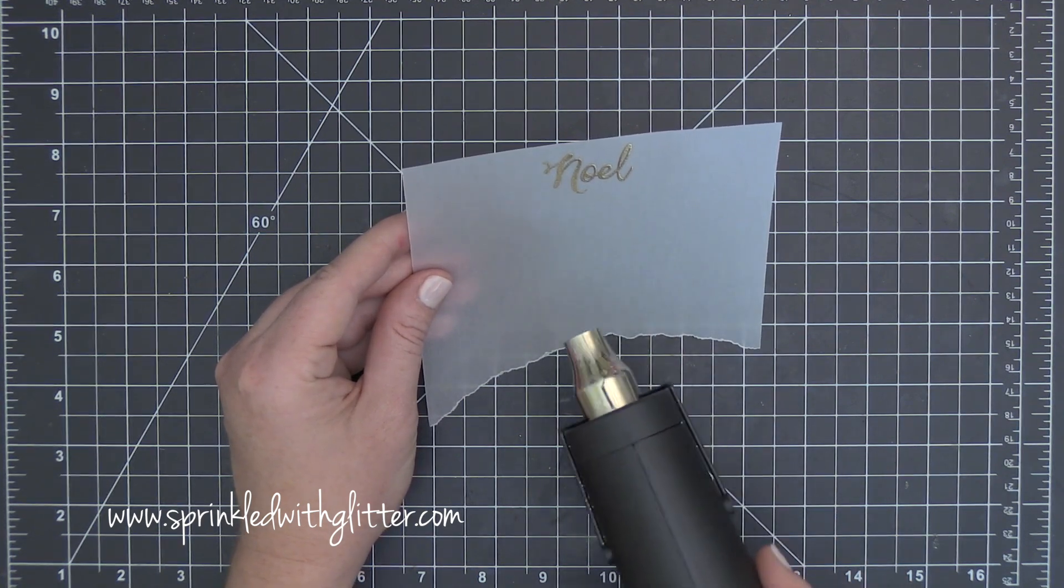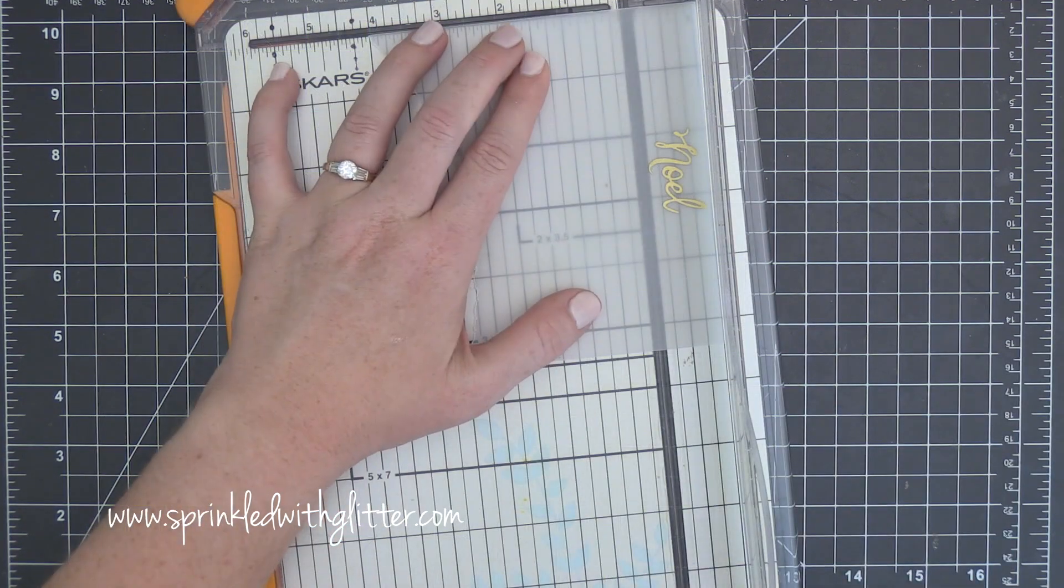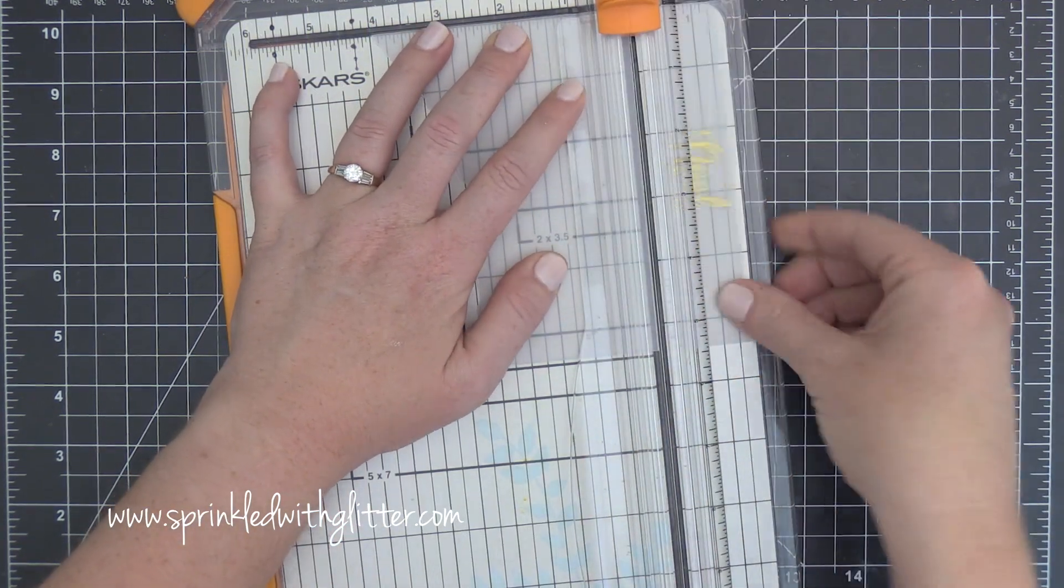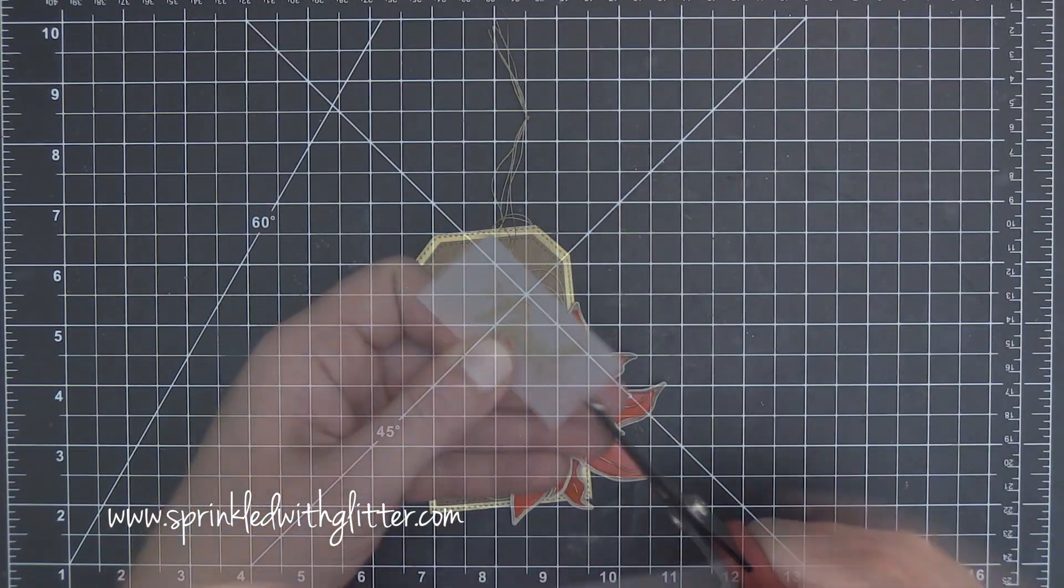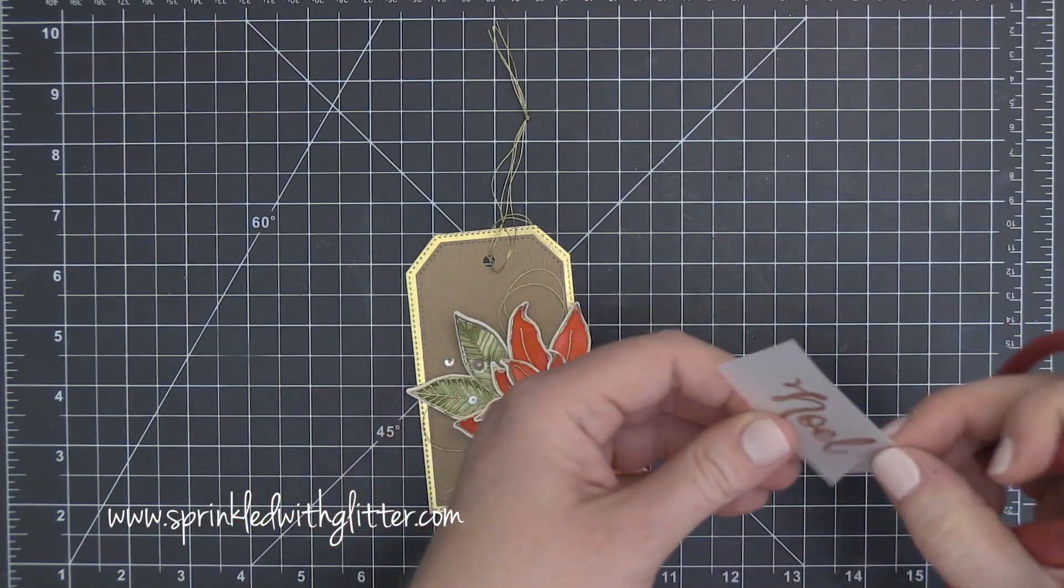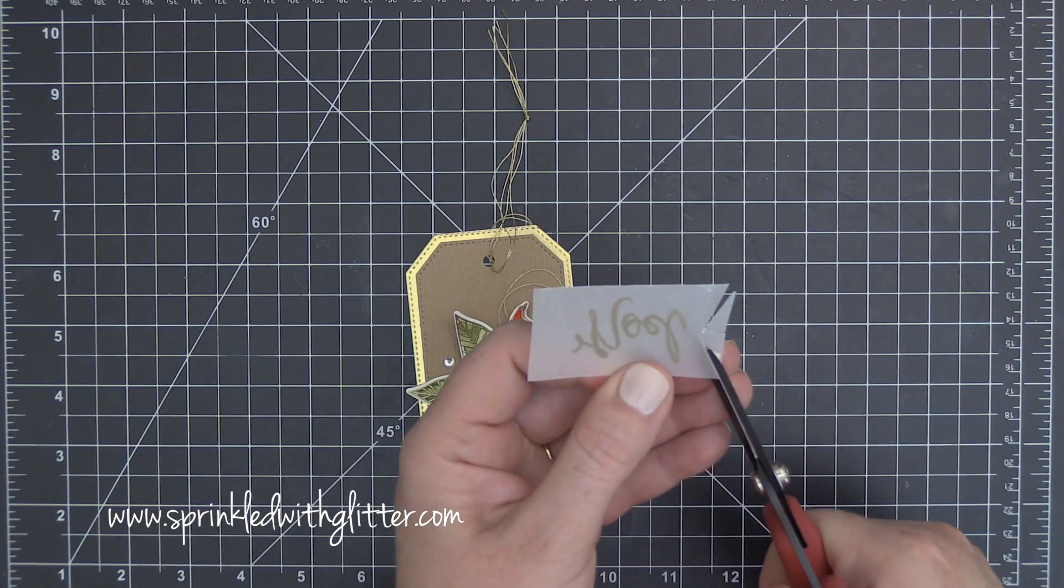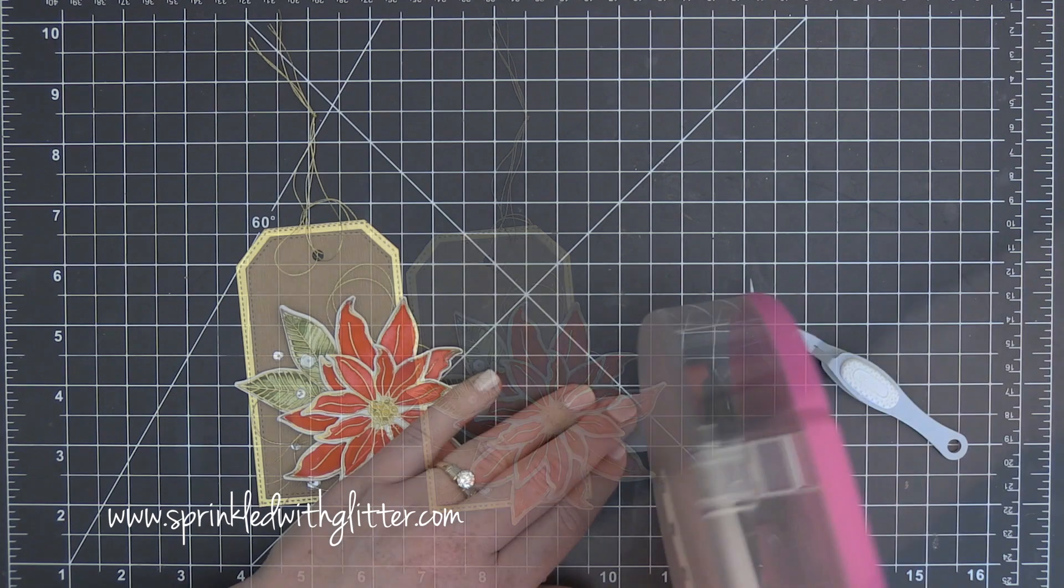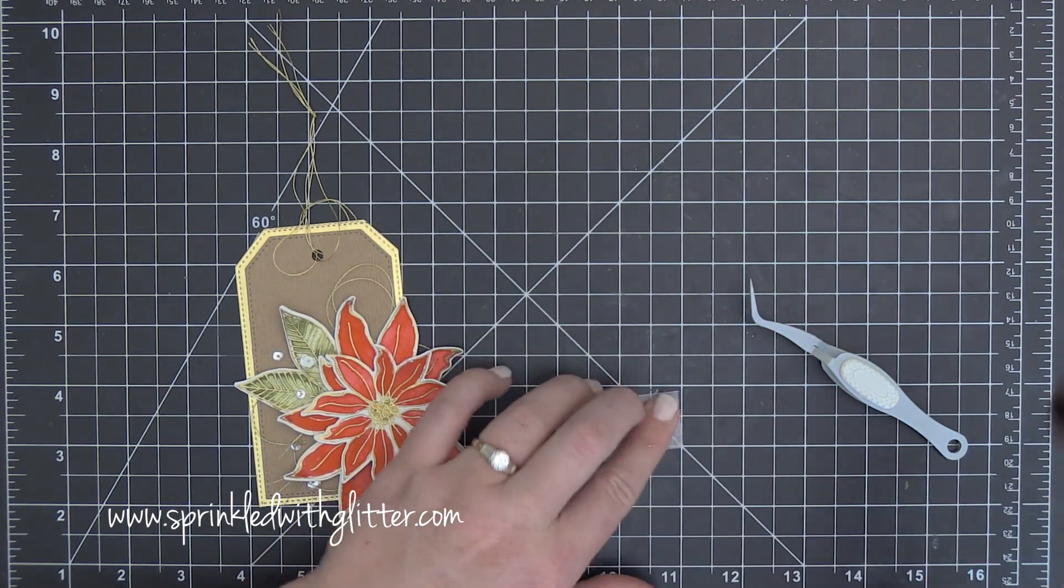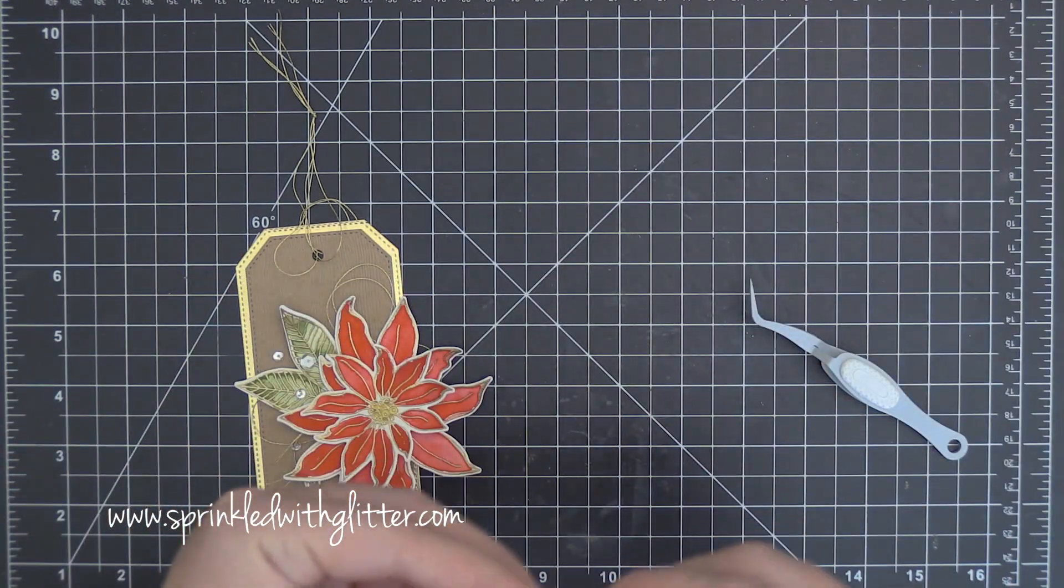Once again really important, especially on vellum, to let your heat tool heat up before you take it to the vellum. Then I can just take this over to my trimmer, trim that down and then I'll cut the end into a little banner shape here. So I'm just cutting up the center and then cutting from each corner to that center slit. Then I'm going to kind of tuck this behind the layers of the flower.